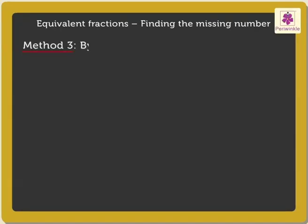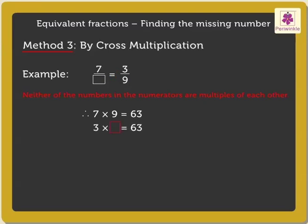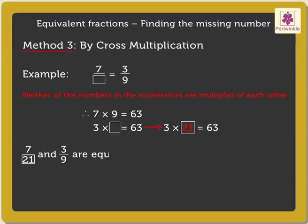Method 3 by Cross-Multiplication: Find the missing number in the given pair of equivalent fractions. Here, as neither of the numbers in the numerators are multiples of each other, for such kind of fractions, we cross-multiply the numerator of one fraction with the denominator of the other fraction — that is, 7 and 9. Thus, 7 into 9 is equal to 63. Now, to find the missing number, we check which factor, when multiplied by 3, gives the product 63. Yes, 3 into 21 is equal to 63. Thus, 7 upon 21 and 3 upon 9 are the given equivalent fractions.